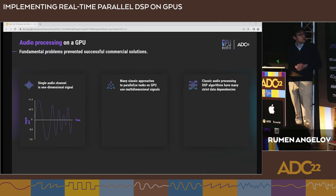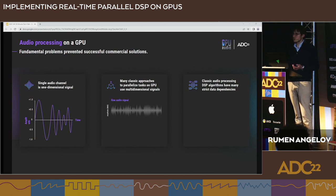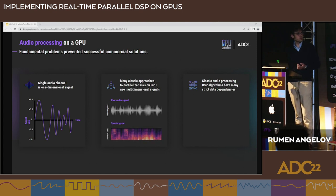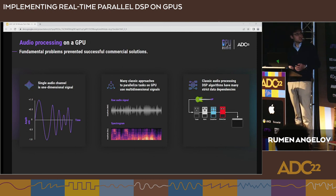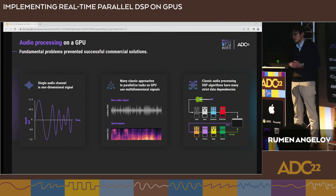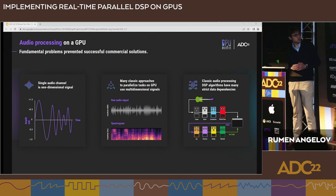Audio data is usually one-dimensional, whereas GPUs are best suited for processing multi-dimensional data which is usually independent. There are some situations where you might think there are dependencies between channels — for example, mid-side panning and things like that — but this is still hard to implement with GPUs.